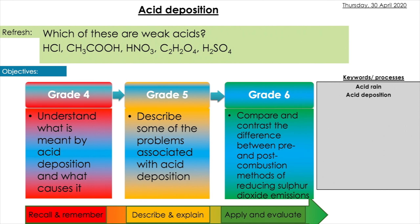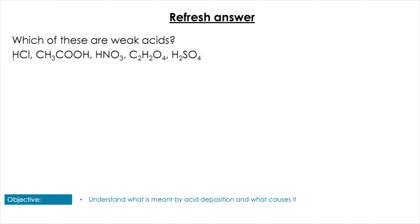Today we are going to level up your understanding of acid rain and take it from a basic cursory understanding to a more chemical understanding. A little refresh — mainly just a recall question to get us started and warmed up. Which of these are weak acids? Hopefully you know that HCl, nitric acid, and sulfuric acid are all strong acids, so therefore your other two are going to be weak acids.